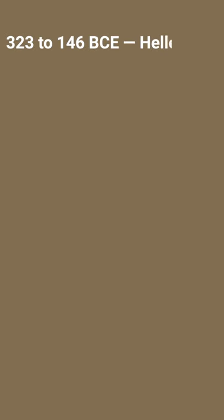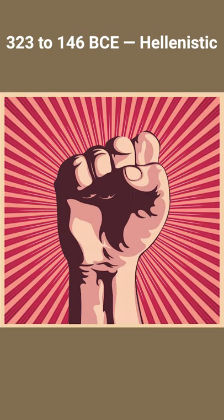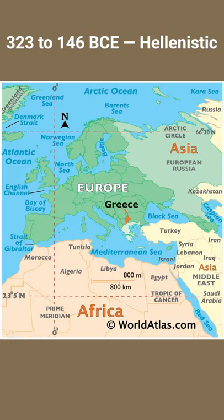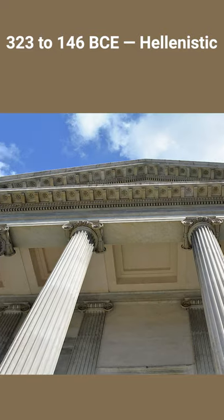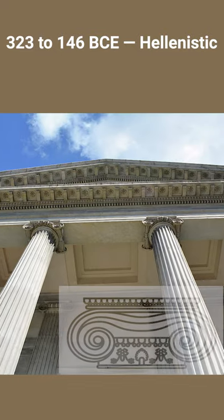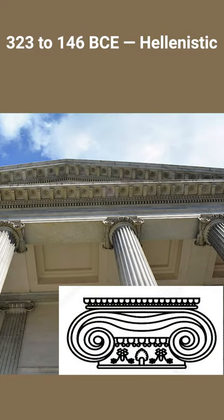The Hellenistic Period: when Greece was at the height of its power in Europe and Asia, the empire built elaborate temples and secular buildings with Ionic and Corinthian columns.